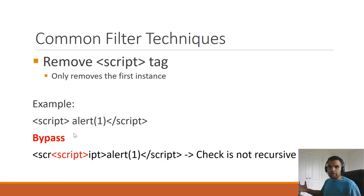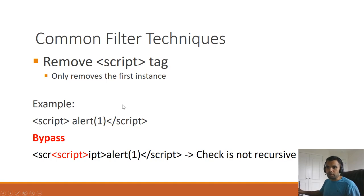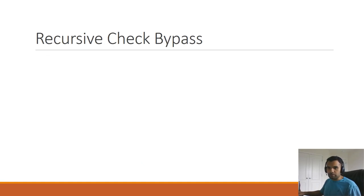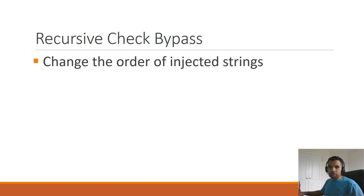Since the check is not recursive, the nested script will still be able to bypass and get executed. So that's the core thing you need to find out: whether the filter technique is recursive or not recursive. If it's just looking for the first instance, then you can easily bypass it. Now what if it's recursive? Can we bypass those? Yes, absolutely.